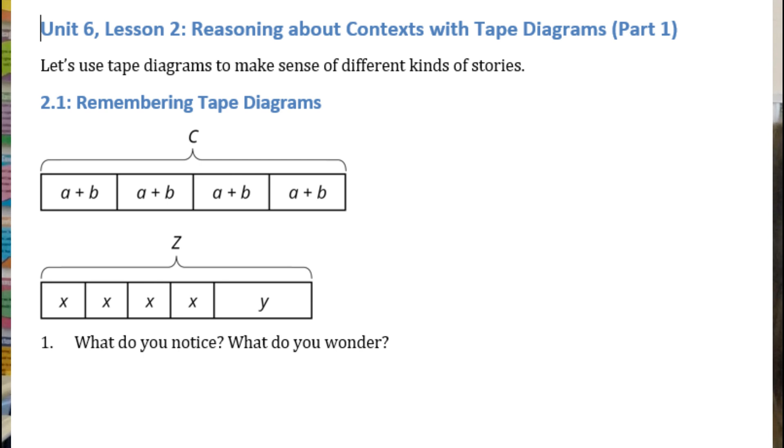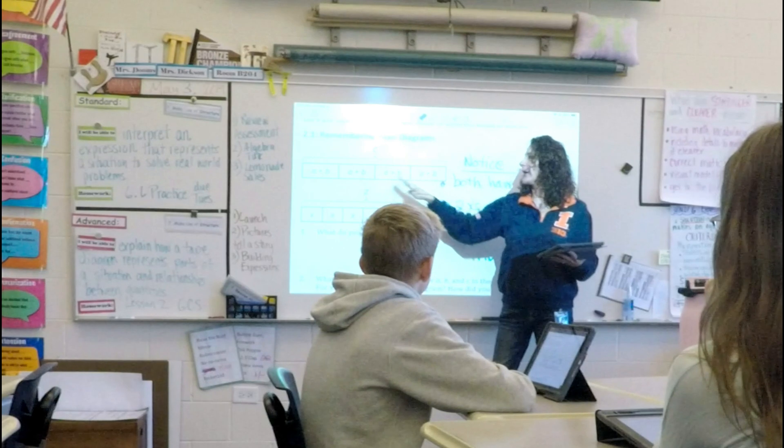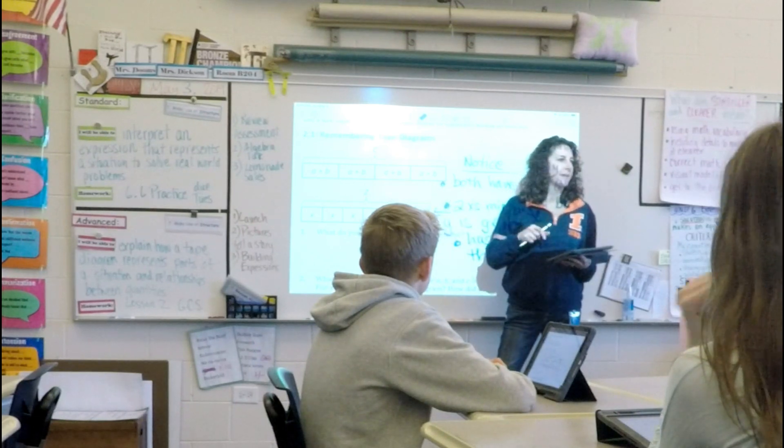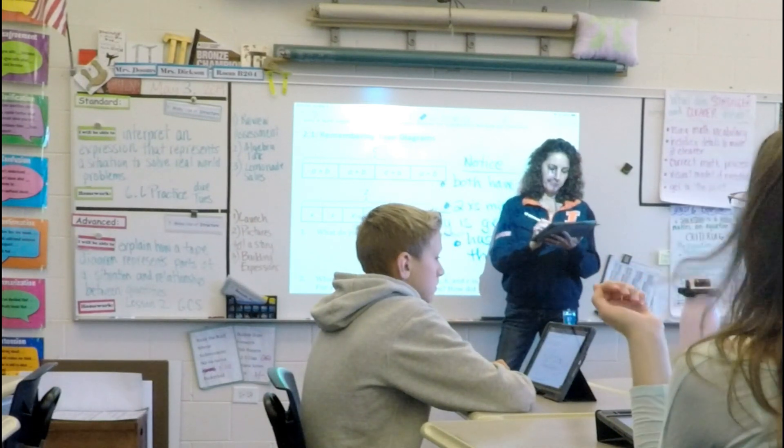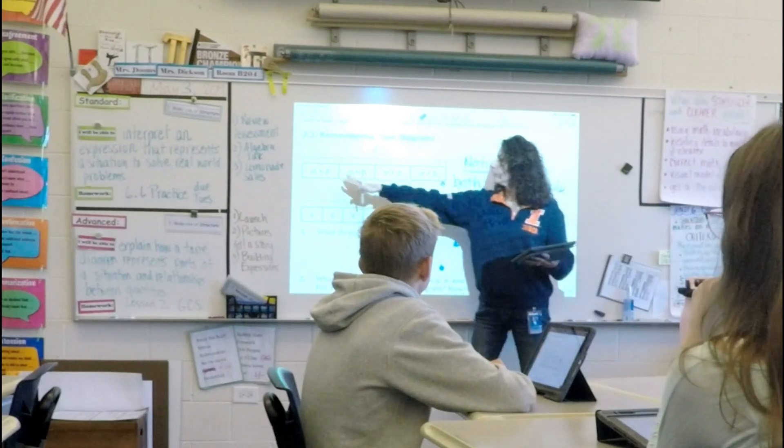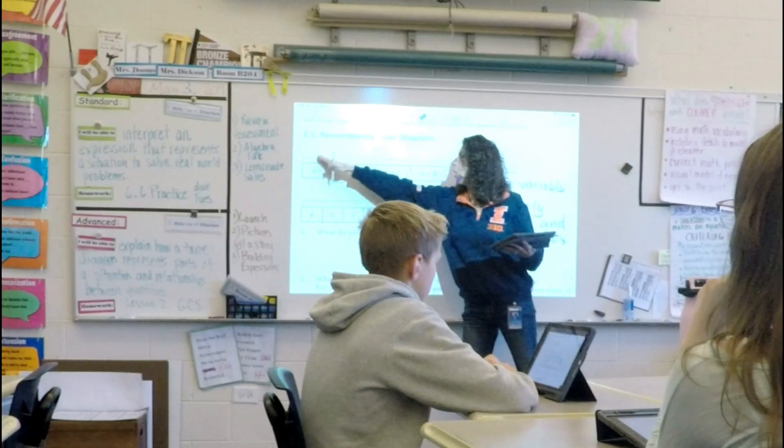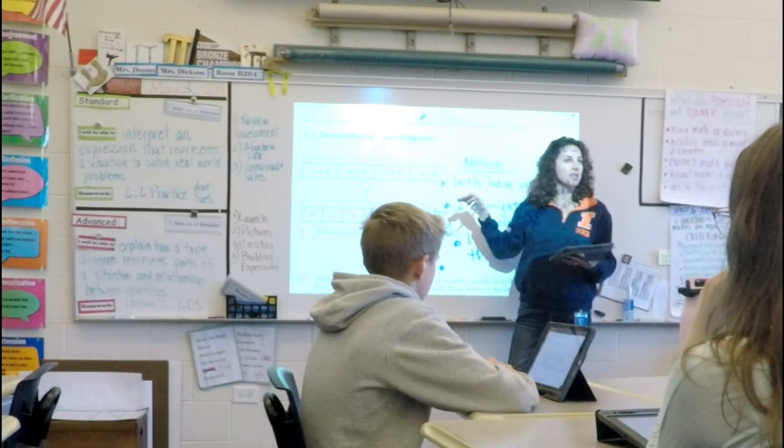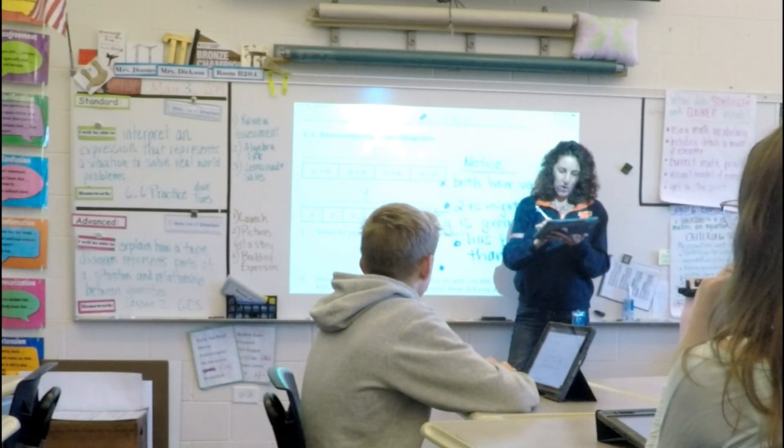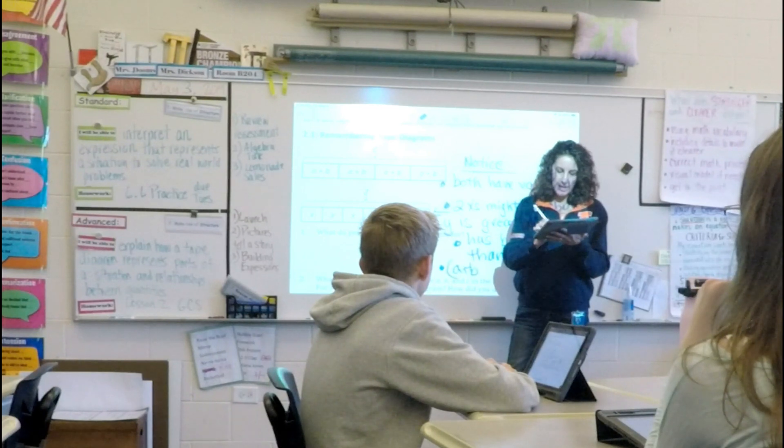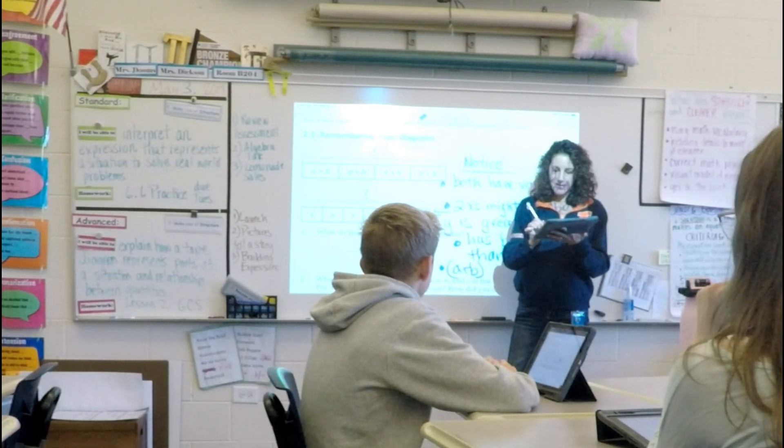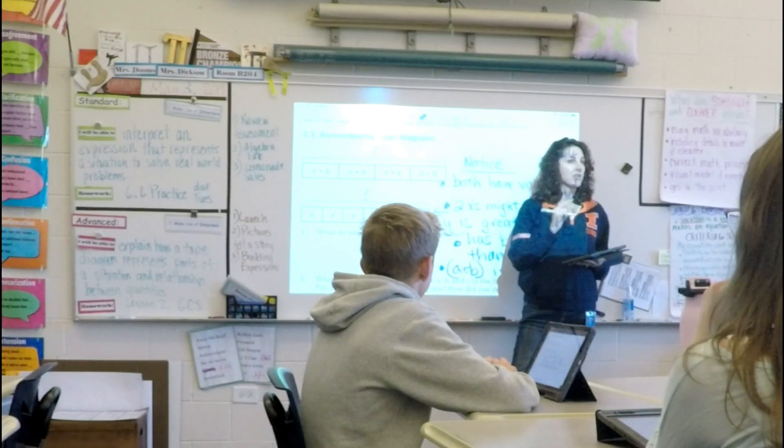Who can explain her reasoning? Who can explain what she means by A plus B is one fourth of C? Ashley? Okay. Because there are four of these boxes that all equal the total of C. Excellent. So A plus B, the quantity A plus B is one fourth of C. Wow. Anything else that you notice?